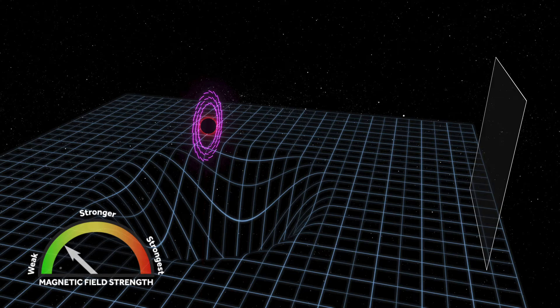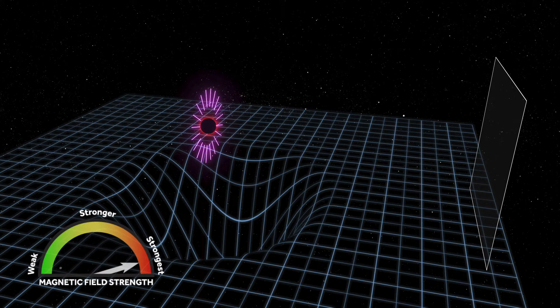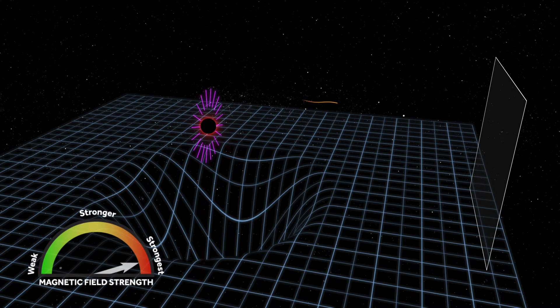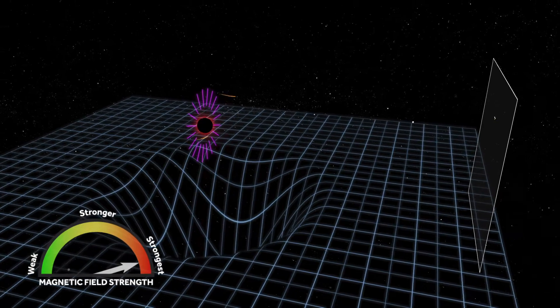On the other hand, extremely strong magnetic fields resist the plasma's motion and straighten out like spokes on a wheel.